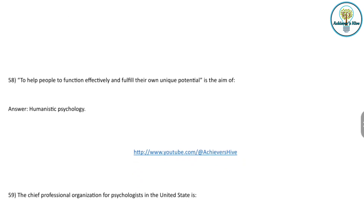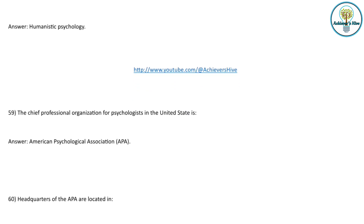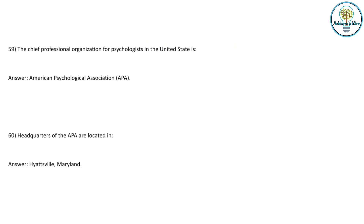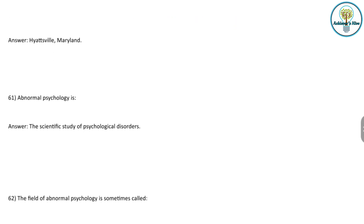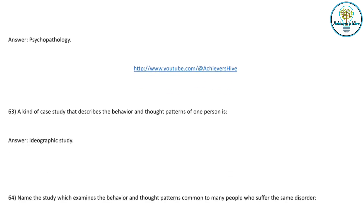Moving on to around question 58: To help people function effectively and fulfill their own unique potential is the aim of humanistic psychology. The chief professional organization for psychologists in the United States is the American Psychological Association, also called APA, headquartered in Maryland. Abnormal psychology is the scientific study of psychological disorders.